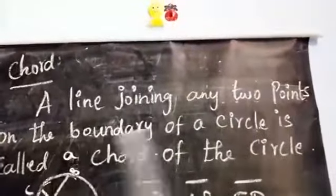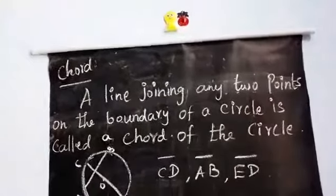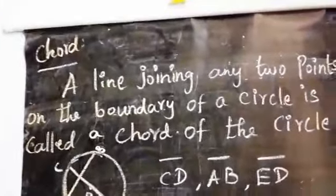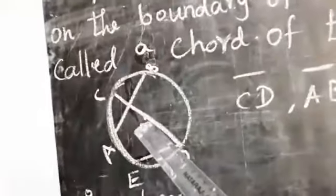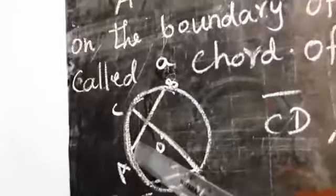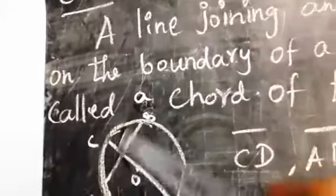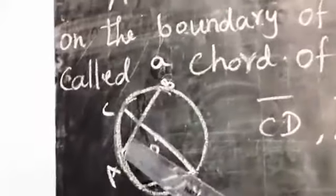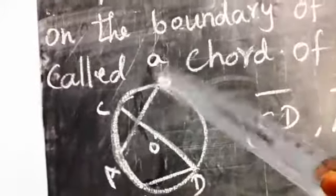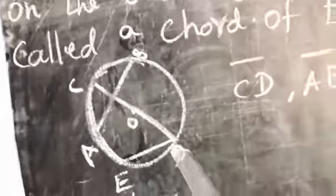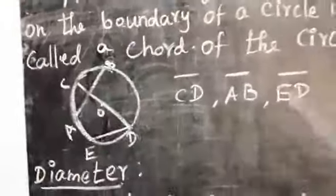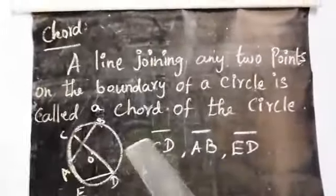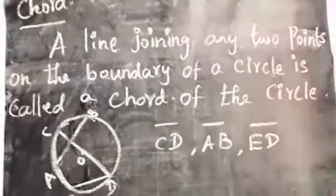Chord. A line joining any two points on the boundary of the circle is called the chord of the circle. Here, look at one circle with center point L. A line joining any two points on the boundary of the circle is called the chord of the circle.